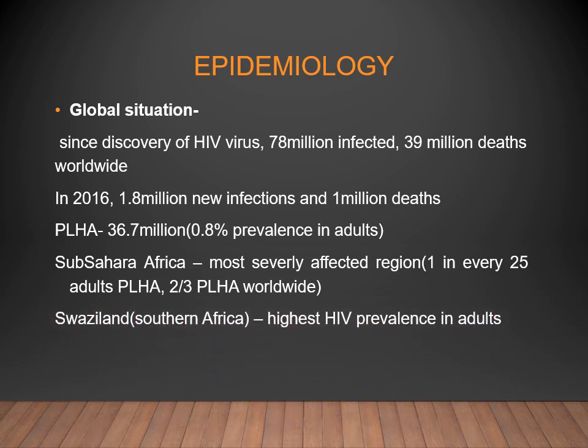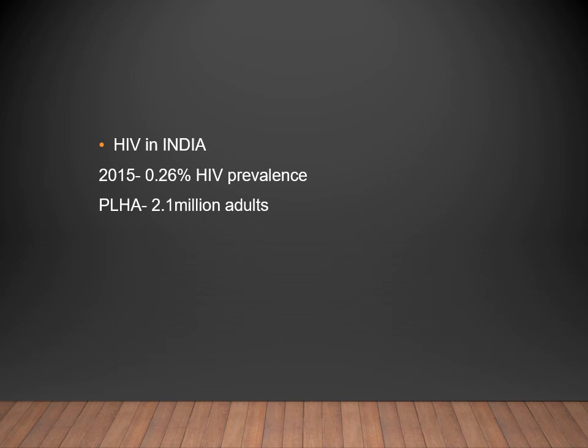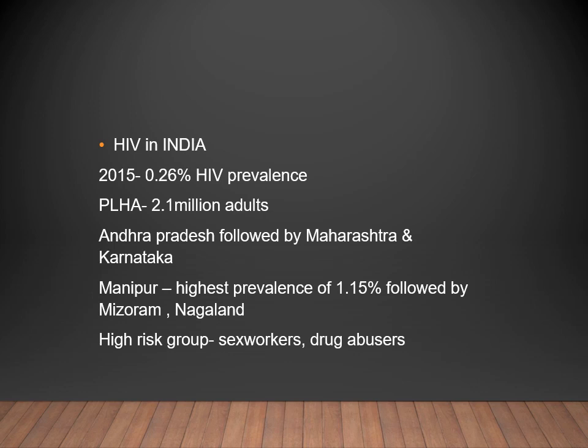In India (2015 data), HIV prevalence is 0.26%, with approximately 2.1 million adults living with HIV. Andhra Pradesh has the maximum number of cases, followed by Maharashtra and Karnataka. Among states by prevalence rate, Manipur leads at 1.15%, followed by Mizoram and then Nagaland. High-risk groups include sex workers and drug abusers.